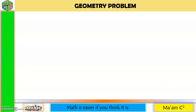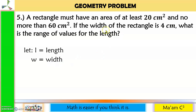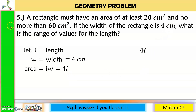Now let us solve word problems involving inequality. A rectangle must have an area of at least 20 cm² and no more than 60 cm². If the width is 4 cm, what is the range of values for the length? Let L be the length and W the width. The area formula is length times width, so 4L. The area must be no more than 60, so 4L is less than or equal to 60, and at least 20, so 4L is greater than or equal to 20.